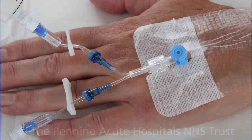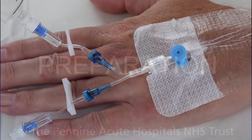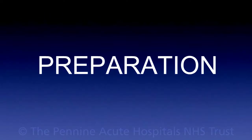A cannula will be inserted into the back of your hand and you will be given a medication through it which will give you a dry mouth. If it has been agreed with your anaesthetist, some sedation will be given through the cannula to help you feel relaxed.